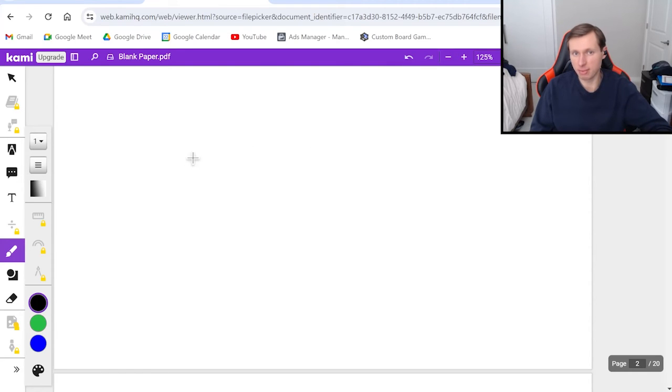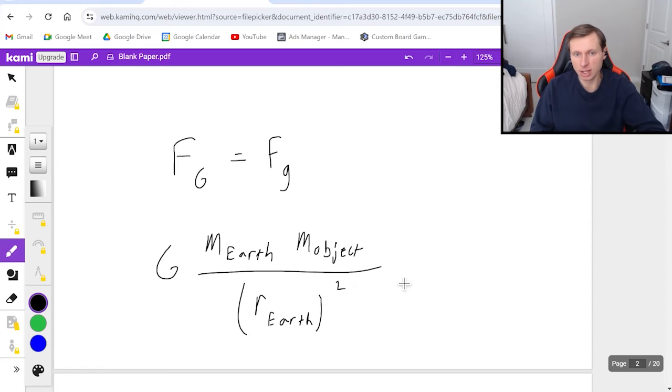And so another way of thinking about this, if I set big G equal to f little g, because like I said, these two things are equal to each other. And fg is equal to big G times mass of the earth times mass of the object divided by the radius of the earth, and that's squared. And I set that equal to m times g, where this mass here is the mass of my object.